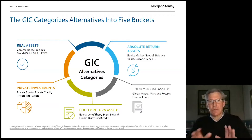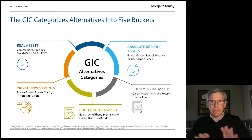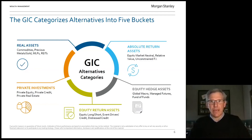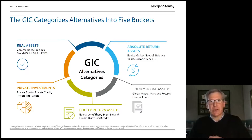You could look at absolute return assets, where the mission is to earn a positive return regardless of the direction of the market. Many investment managers compare their return to the market — that's known as relative. If we're down 20% but your portfolio is down 15%, we've added value relative to the market. The difference with absolute return strategies is that regardless of the market's direction, these strategies are designed to earn a positive return. Then there are equity hedge assets, where you invest in equities but hedge out some of the downside exposure.